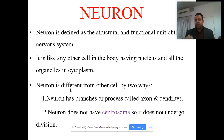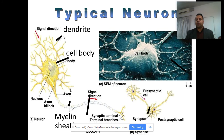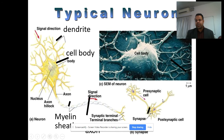Neurons do not have centrioles, so they do not undergo division. Typically, the neuron has a cell body with dendrites, a nucleus, an axon, and an axon hillock. The signal direction goes from the dendrites through the cell body towards the axon terminals. There is a synaptic terminal and terminal branches, and two neurons are connected via synapses — a pre-synaptic cell and a post-synaptic cell. The signal is received by dendrites in the sensory neuron, integrated, and then the post-synaptic signal is passed to the effector motor organ to produce a response.